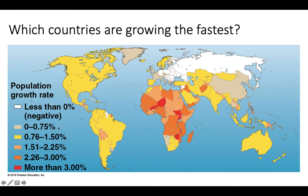The growth rate tells us how fast a population is growing. Countries in yellow, like the United States, are growing relatively slowly, whereas countries in orange and red tend to be growing a lot faster. We're going to break down the reasons for those differences, especially as we start talking about something called the demographic transition model. It has a lot to do with wealth, the age of these countries, and technology as well.